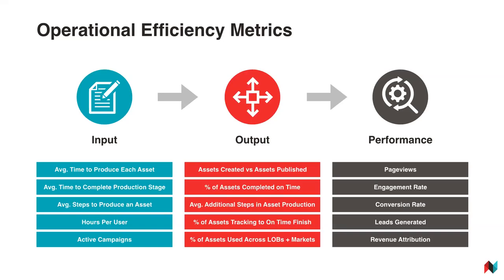Your performance metrics are obviously going to be very bespoke and particular to your strategy, but it's important to get as close as possible to the performance of each individual asset and to understand how each is affecting your bottom line. You should try to prove out the leads, revenue, and engagement that can be attributed to each particular asset — because that's really what enables you to quantify the success of your resources and put that dollar value on success.